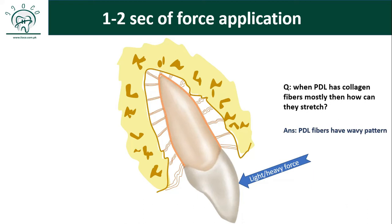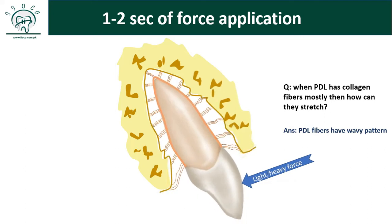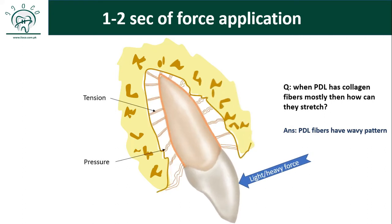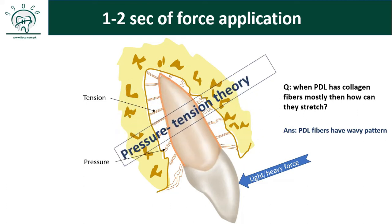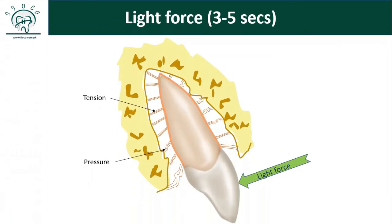The answer is that PDL fibers have a wavy pattern. Initially the fibers form a wavy pattern, and when force is applied and the tooth moves, these fibers are straightened. Two kinds of areas in PDL then develop: fibers under stretch are under tension, and other fibers are under compression or pressure. This has given rise to the pressure-tension theory of tooth movement.